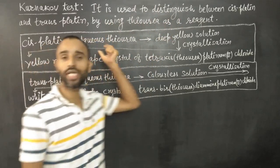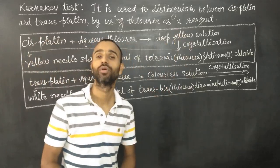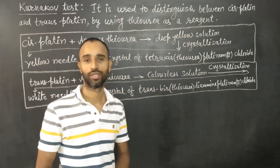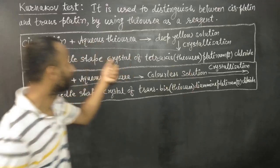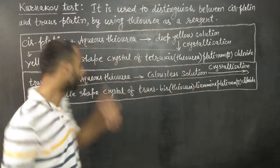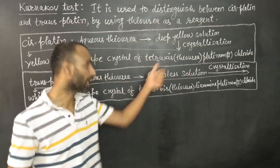Now what happens when thiourea is added to cisplatin: we get a deep yellow solution, and on crystallization we get needle-shaped crystals of tetrakis thiourea